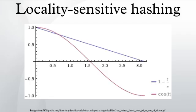The process is stopped as soon as a point within distance from Q is found. Given the parameters K and L, the algorithm has the following performance guarantees: preprocessing time, where T is the time to evaluate a function on an input point P; space plus the space for storing data points; query time.